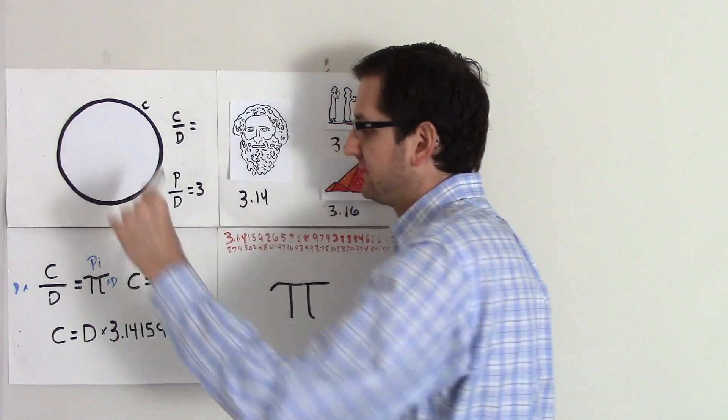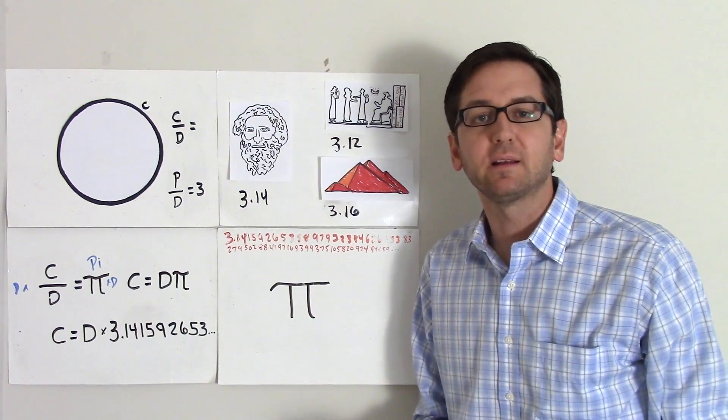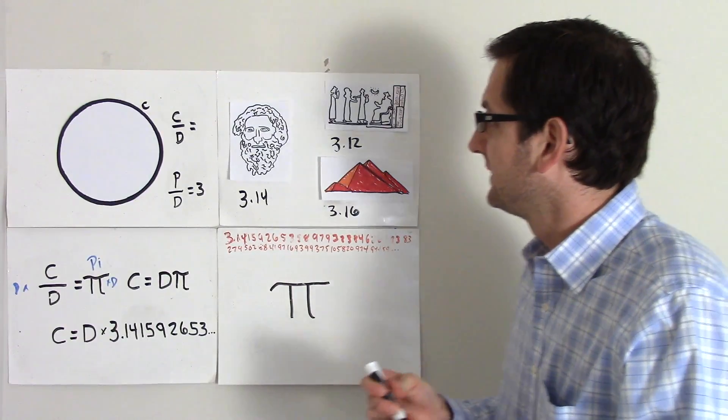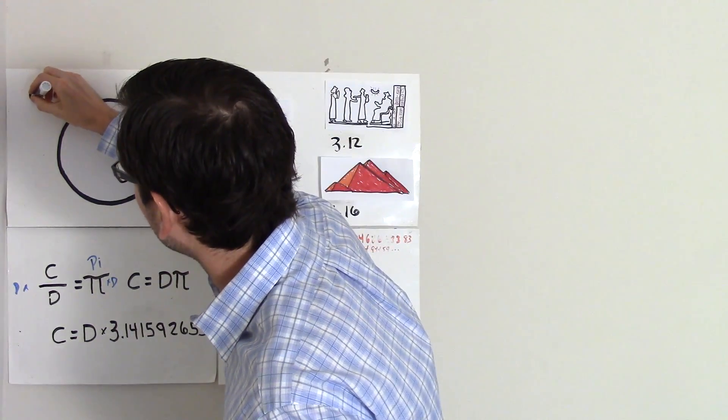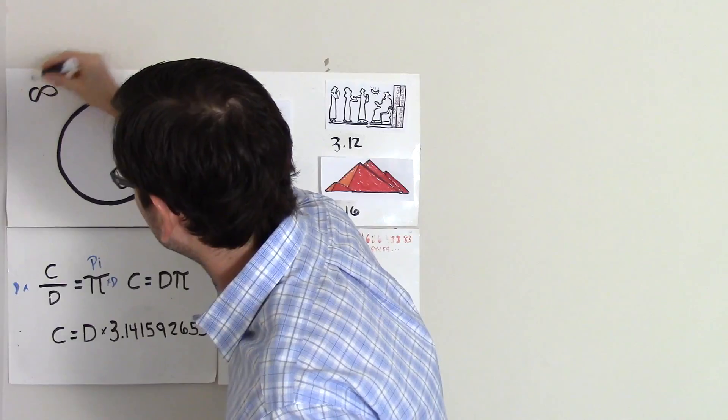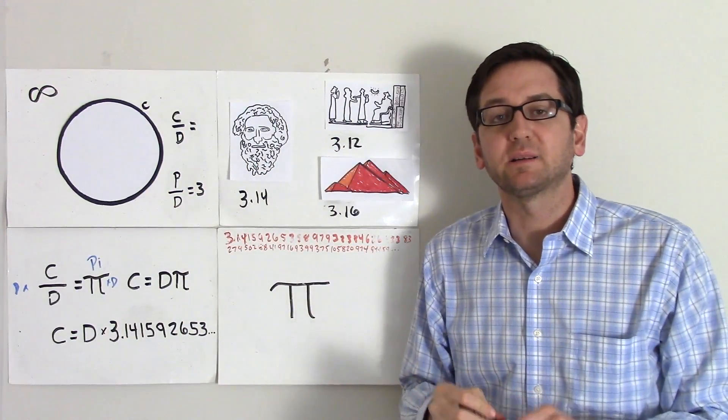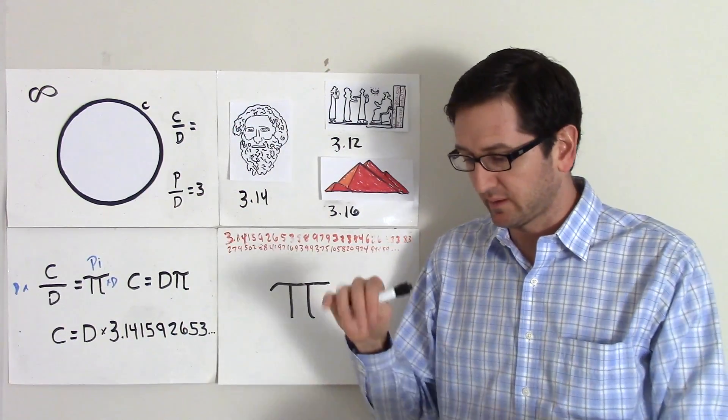They lacked the ability to understand that you would need a regular polygon with infinite sides. That's why they could only get an approximation.